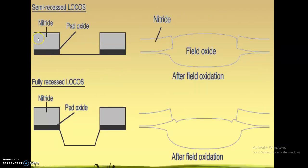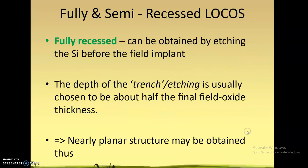There are two types of LOCOS: semi-recessed and fully recessed. In semi-recessed, you do oxidation directly in the exposed region and the field oxide grows above the surface of silicon. In fully recessed LOCOS, you etch away half the desired thickness of the field oxide from the silicon substrate, and after the field oxide is grown, the level of the field oxide is almost the same as that of the silicon substrate.